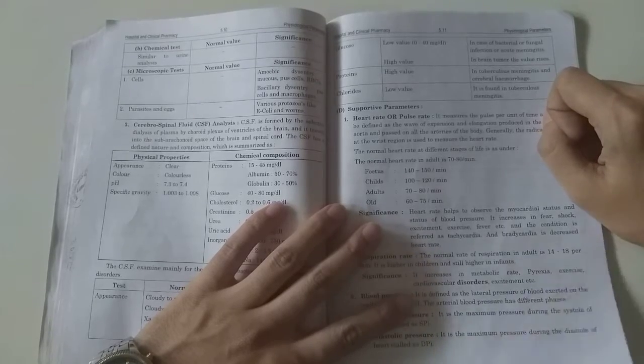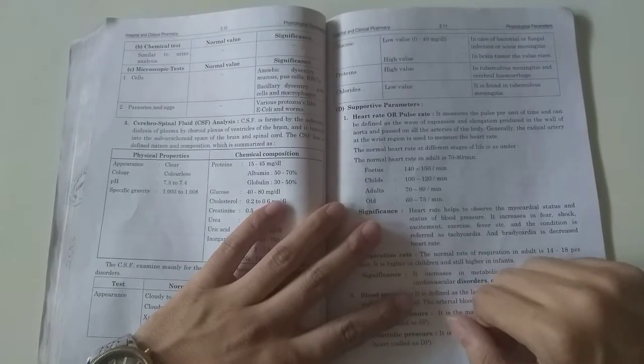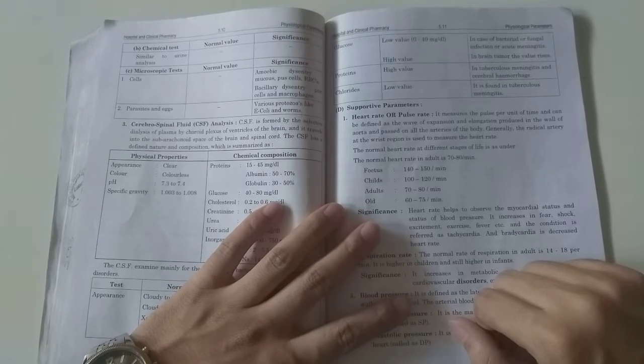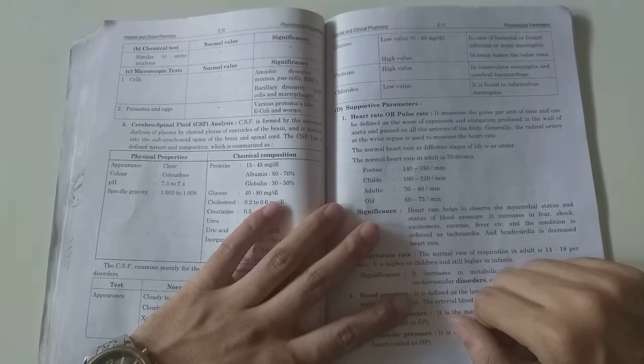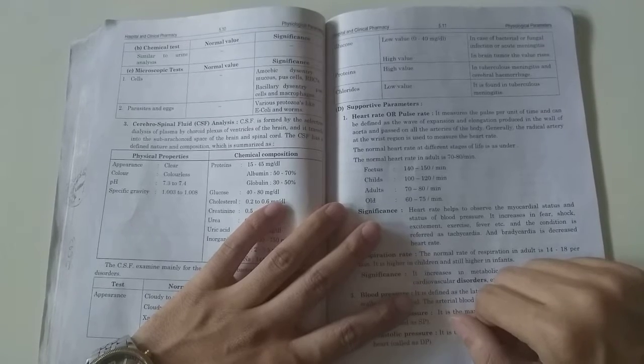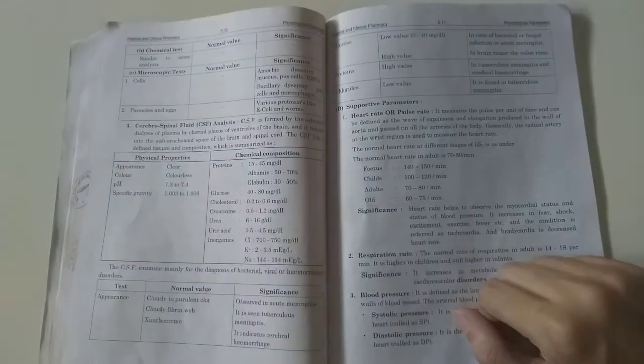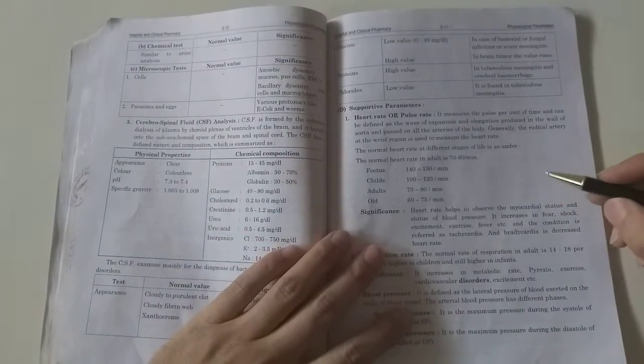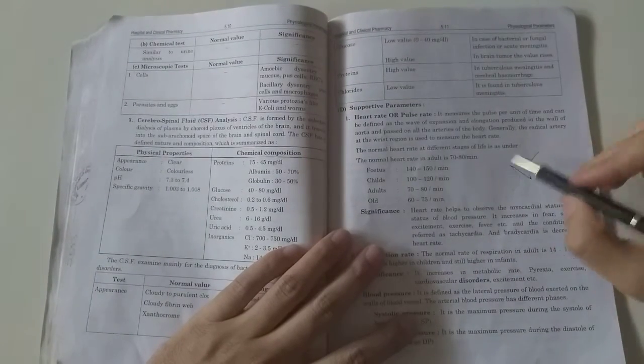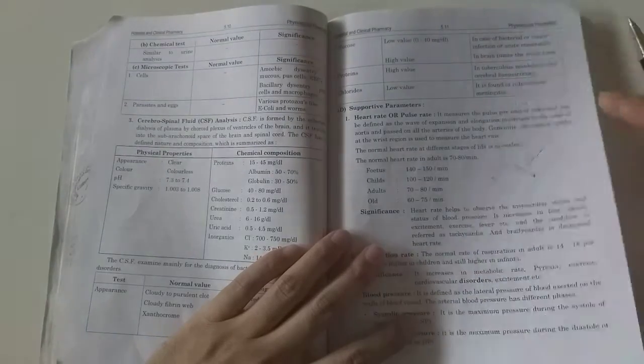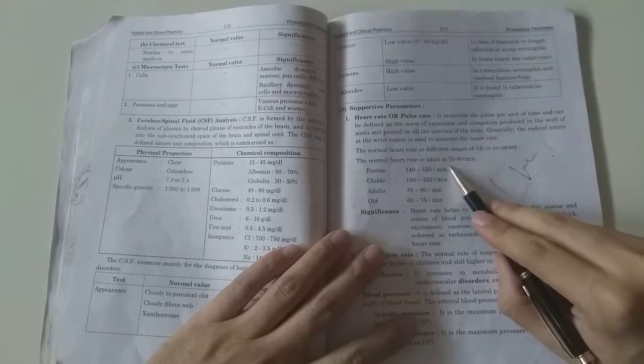The supportive parameters are heart rate and pulse rate. It measures the pulse per unit of time and can be defined as the wave of expansion and elongation produced in the wall of aorta. The radial artery at the wrist region is used to measure heart rate. You evaluate pulse rate and heart rate on the same basis.